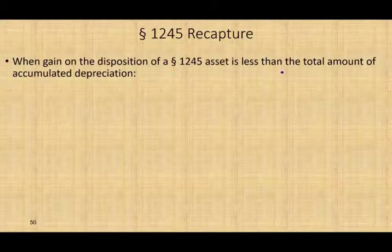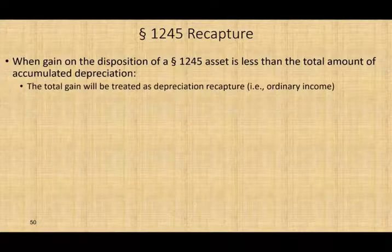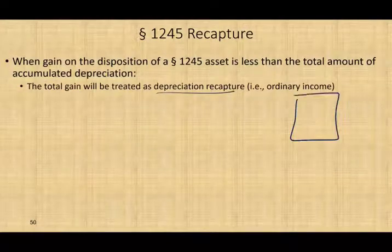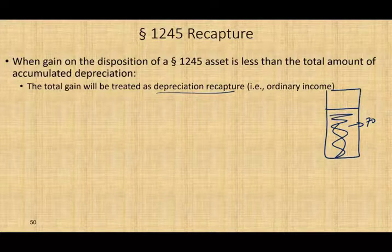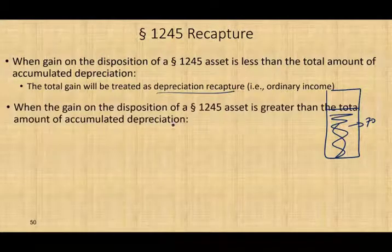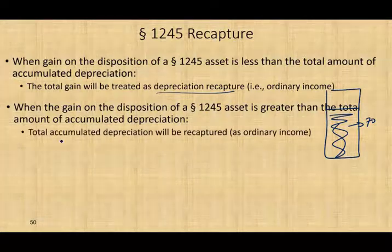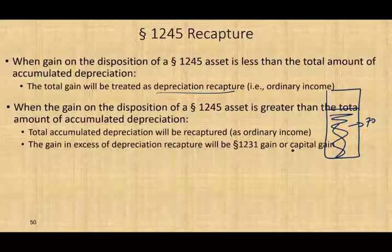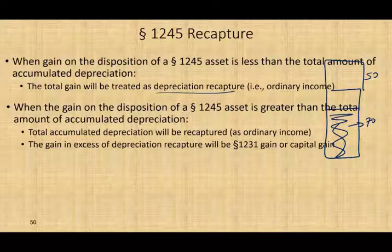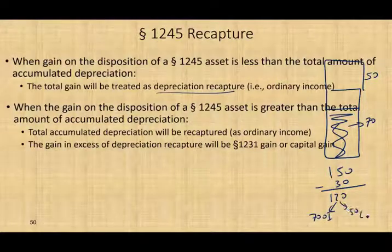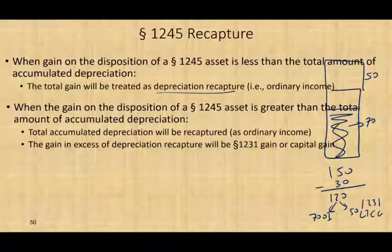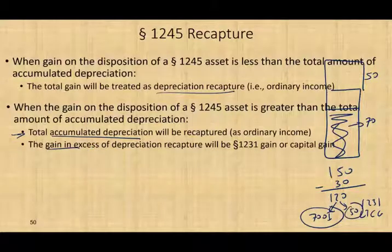When the gain on disposition of a Section 1245 asset is less than total accumulated depreciation, the entire gain is treated as depreciation recapture — ordinary income. When the gain exceeds accumulated depreciation, the accumulated depreciation portion is ordinary income, and the gain in excess is Section 1231 long-term capital gain. In our example, selling at $150 gave us $70 ordinary income and $50 long-term capital gain.